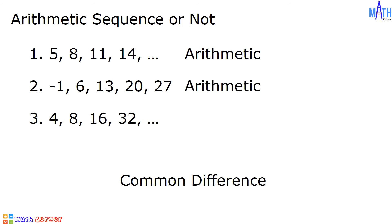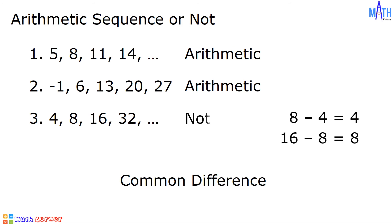In number 3, 8 minus 4 is equal to 4, but 16 minus 8 is equal to 8. There is no common difference. It means that 4, 8, 16, 32 is not an arithmetic sequence.